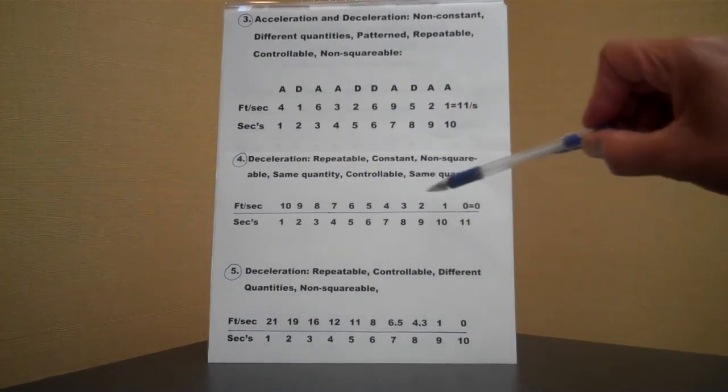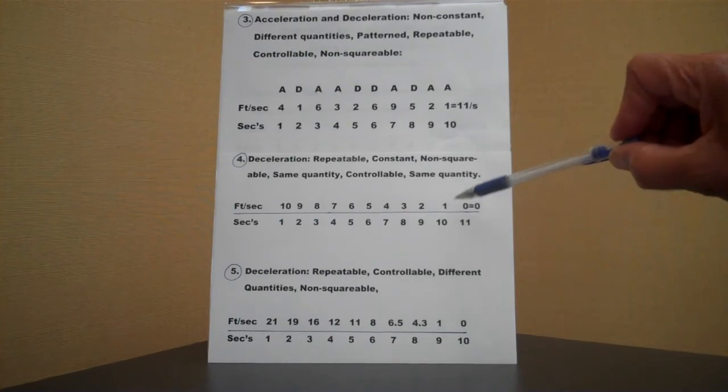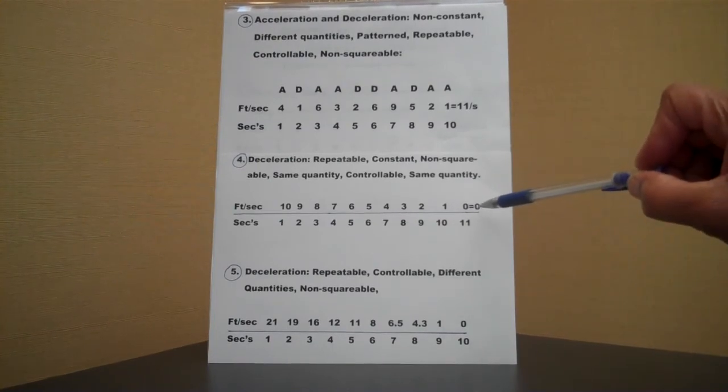You're going to go ten, nine, eight, seven, six, five, all the way down to one foot per second, then zero, in which, in the end, you have stopped with zero.